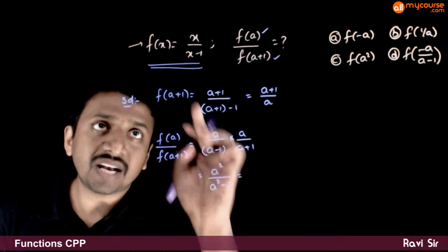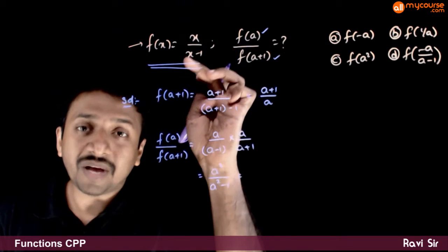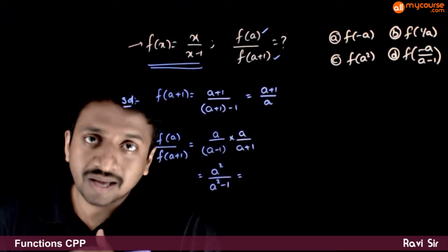Do you see that it looks like x by x minus 1 when x is equal to a square?